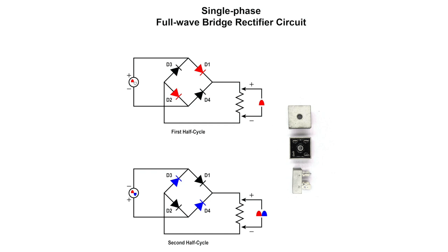During the second half cycle, the polarity of the AC line voltage reverses. This causes diodes D3 and D4 to become positive. Current flows now from the negative side of the line, through D3, to the load, and then through D4, and back to the other side of the line.